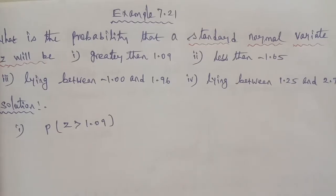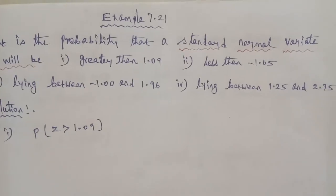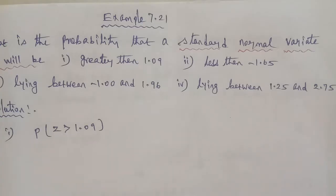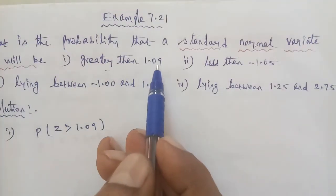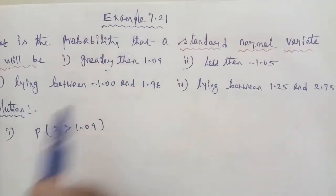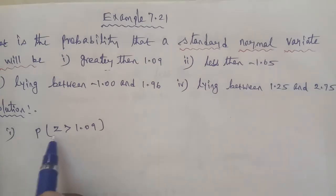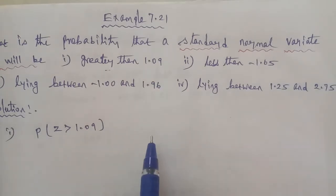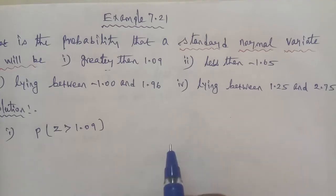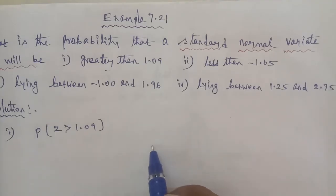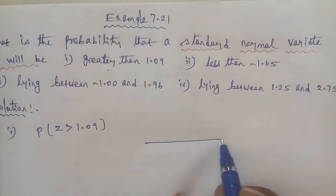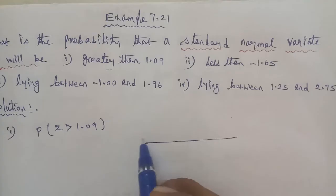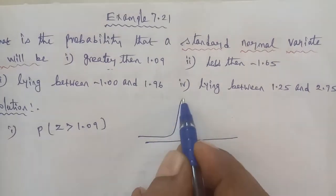Given the standard normal variate, for subdivision 1, Z will be greater than 1.09. Therefore, we find the probability of Z greater than 1.09. To solve this, we use the normal distribution curve — this is a bell-shaped curve. First of all, draw the bell-shaped curve.